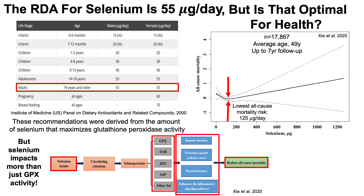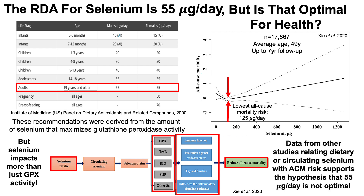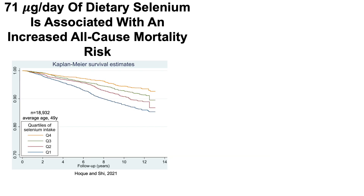The lowest all-cause mortality risk was present when dietary selenium intake was 125 micrograms per day — already higher than the 55 micrograms per day RDA. Data from another study of about 19,000 people also supports this: the group averaging 71 micrograms per day had the highest all-cause mortality risk, while groups consuming 100 and 126 micrograms per day had lower risk.